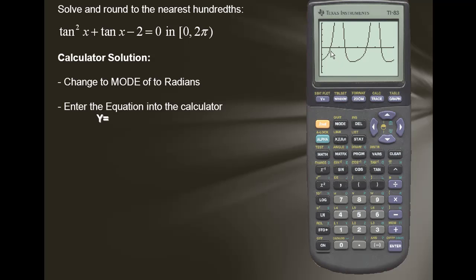In order to find the solutions, in essence we're finding the x-intercepts or the zeros of the function. Based on the graph, there are four x-intercepts or four zeros or four solutions.